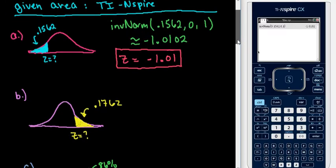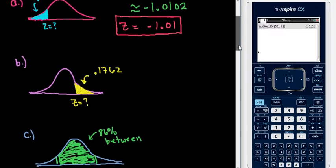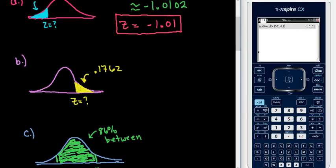For this, like I said, it defaults to the left, it only finds the area to the left, so if you are given the area to the right, in the TI-inspire, you must first find the area to the left by doing 1 minus the given area.